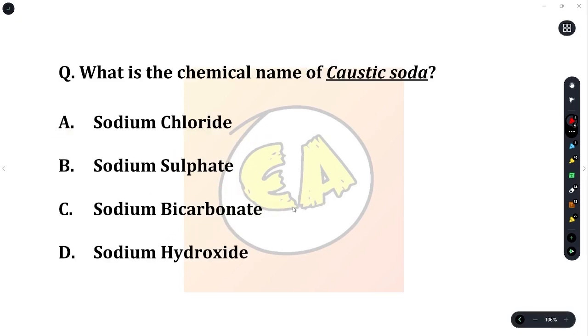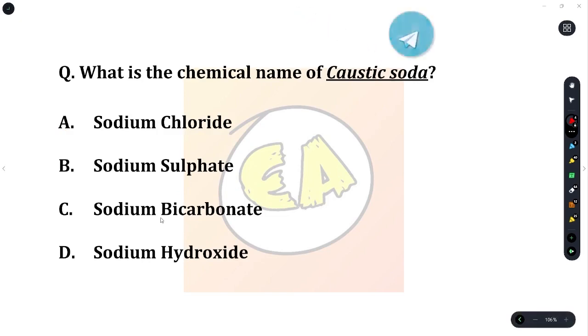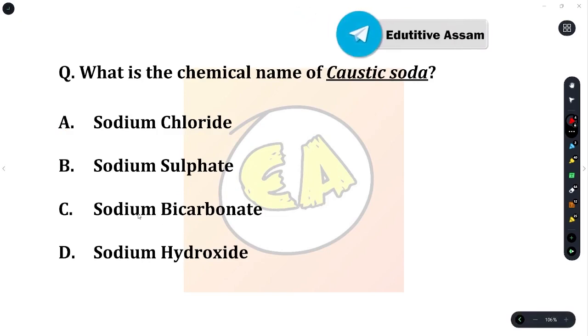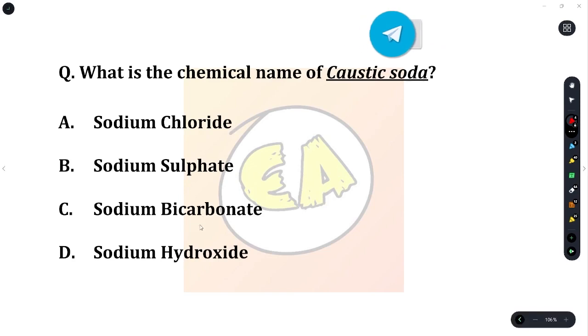Next question: what is the chemical name of caustic soda? Option A: sodium chloride. Option B: sodium sulphate. Option C: sodium bicarbonate. Option D: sodium hydroxide.